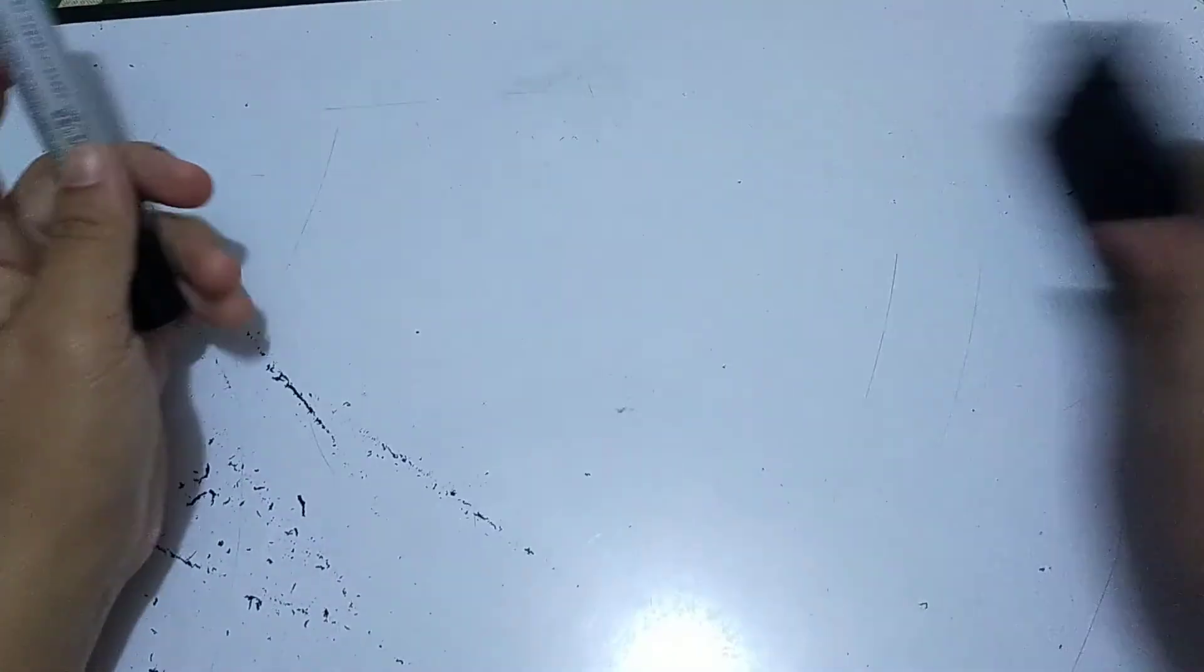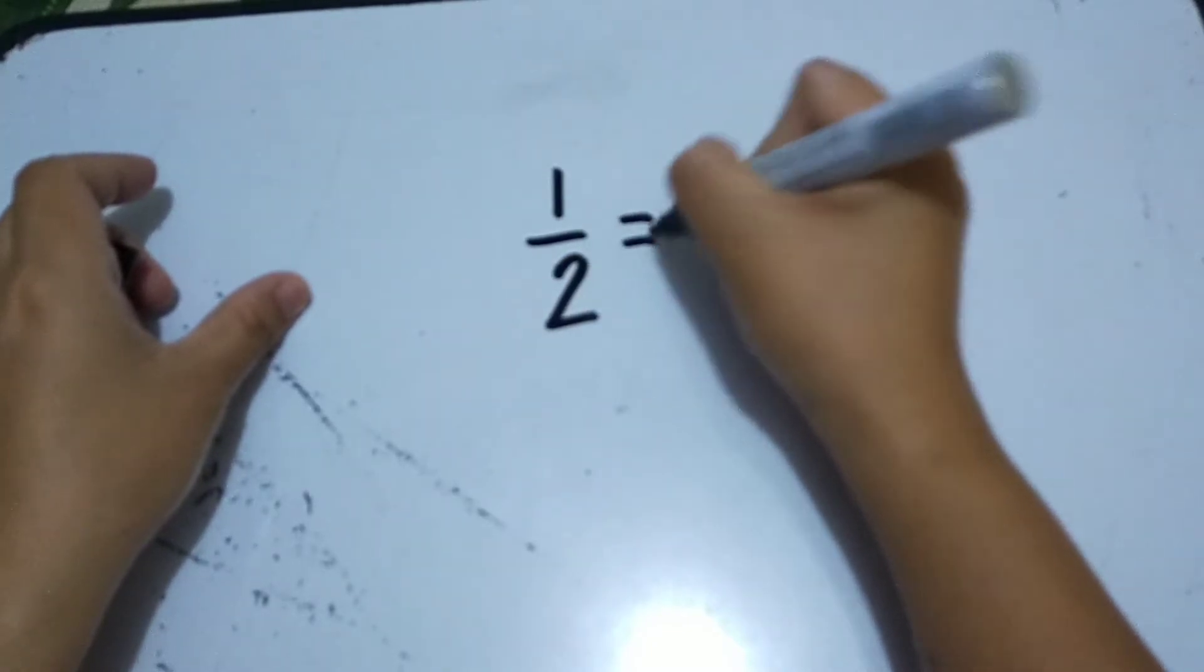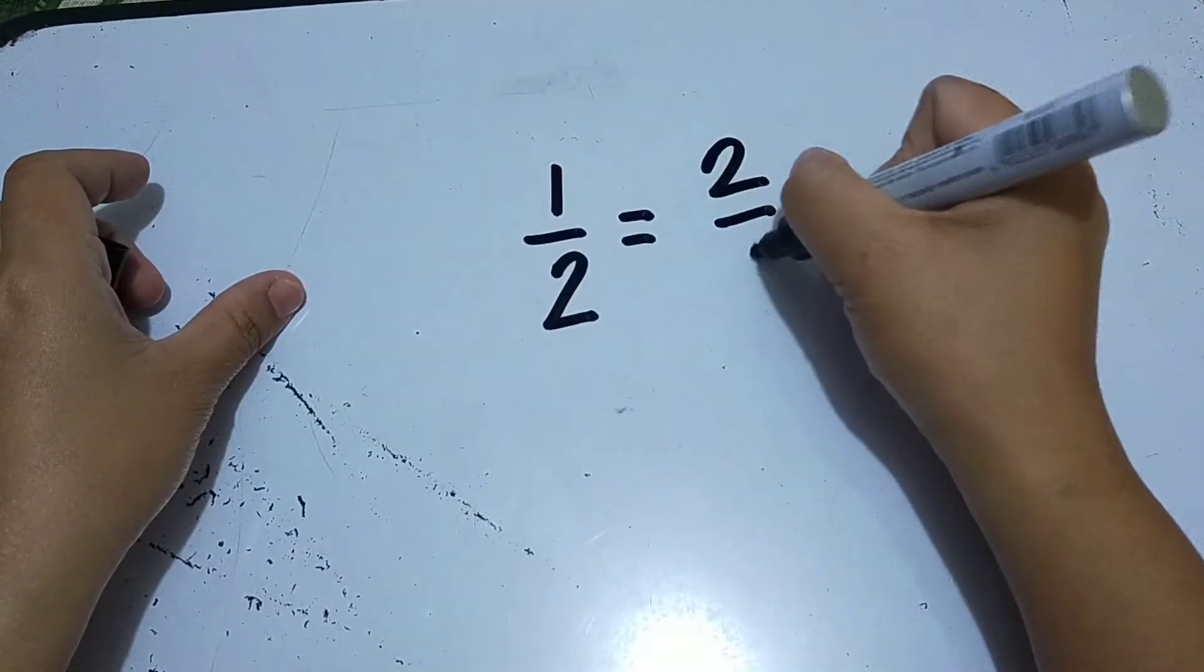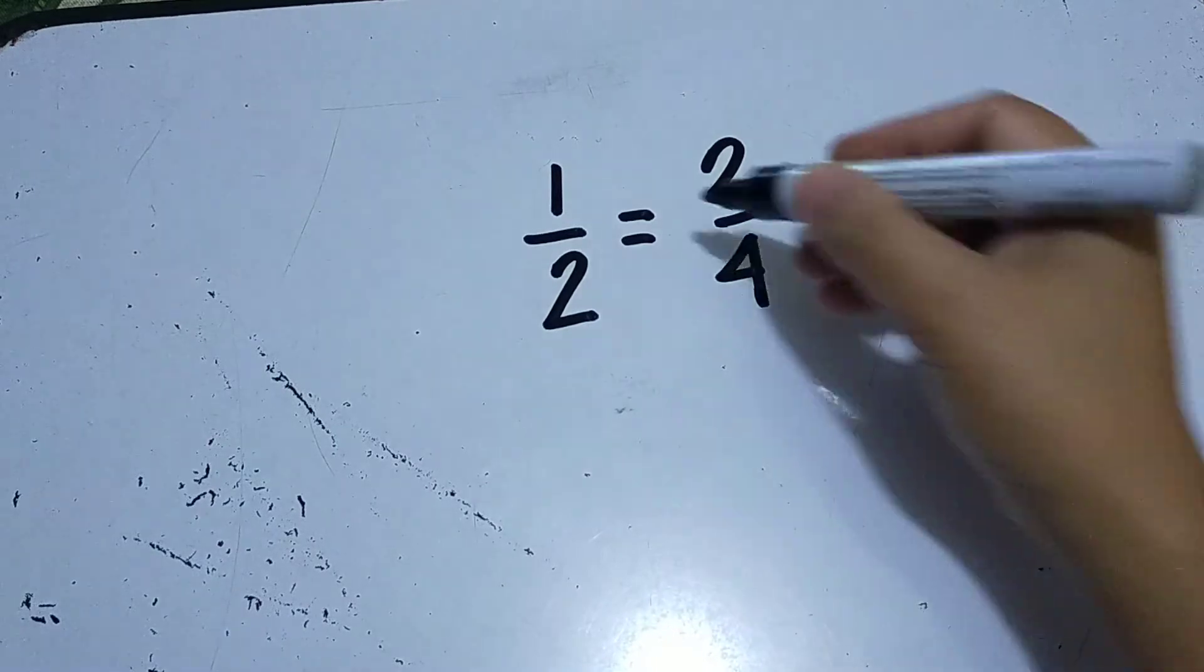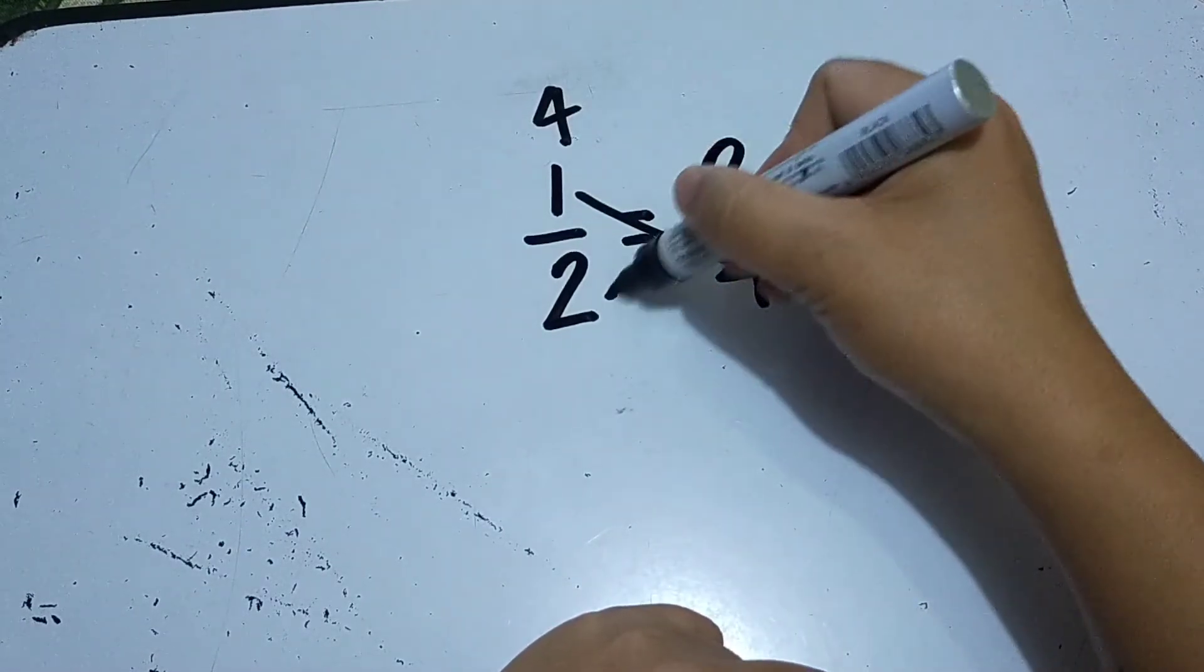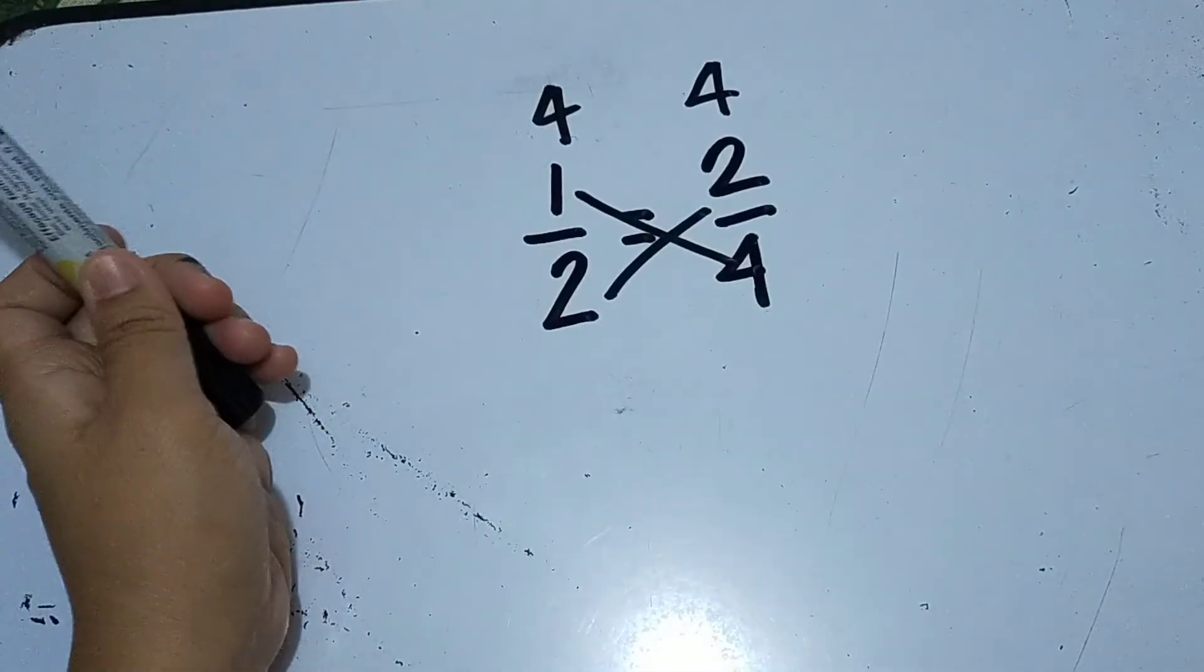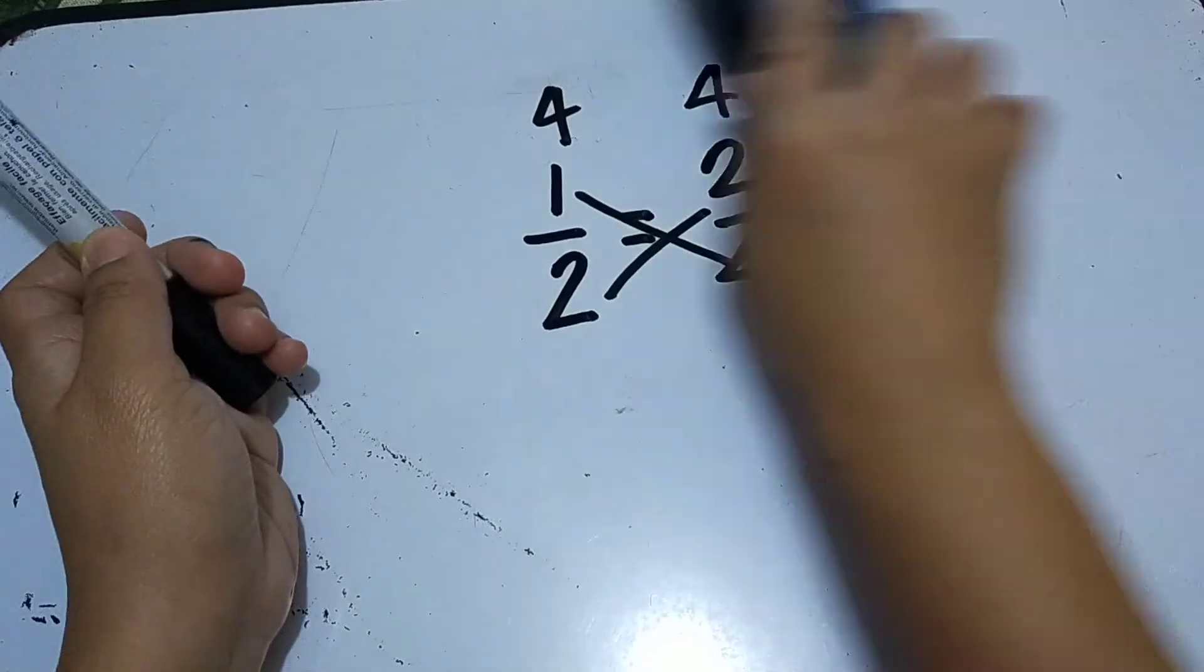Another. 1 half is equal to 2 is to 4. Let's cross-multiply. 1 times 4 is 4, 2 times 2 is 4. Therefore, the given is an equivalent fraction or equivalent ratio.